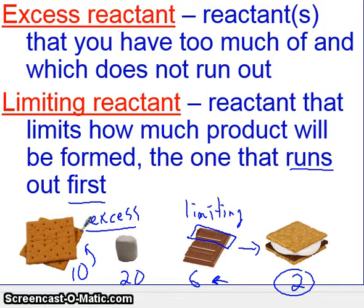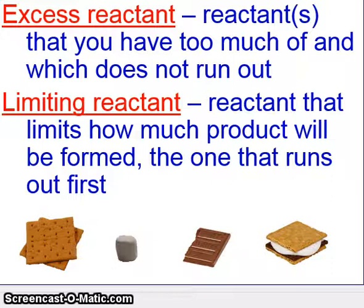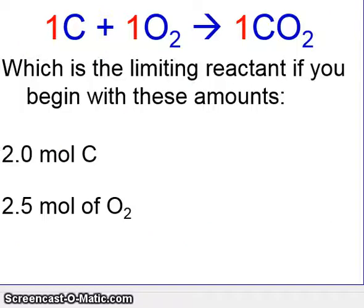That's kind of the idea. We're going to apply this idea to chemical equations. So let's go ahead and start it. We'll begin with a simple example of this. Here we have a very simple equation, one carbon plus one oxygen gives you one CO2. The question is, which is the limiting reactant if you begin with these quantities?